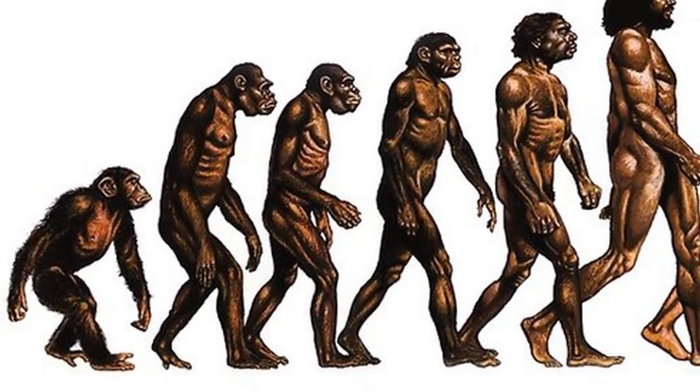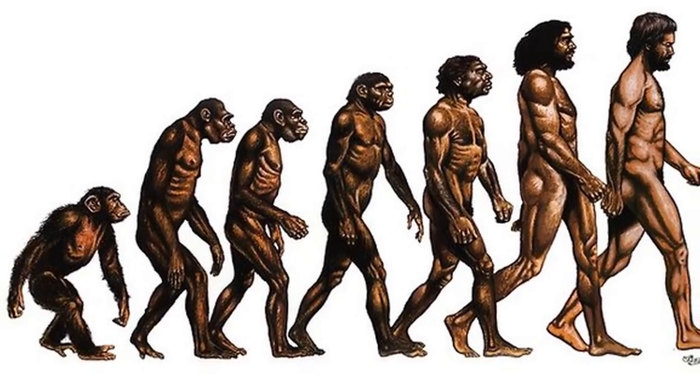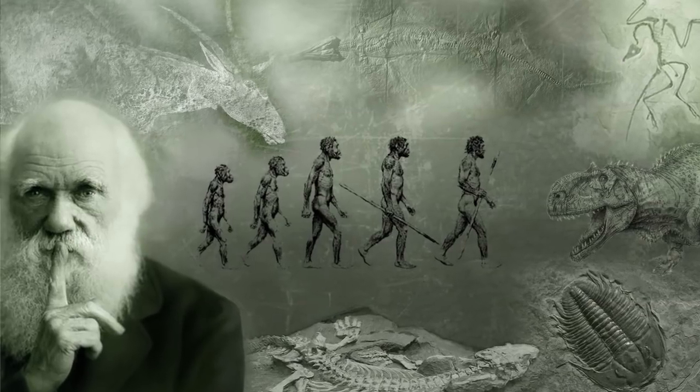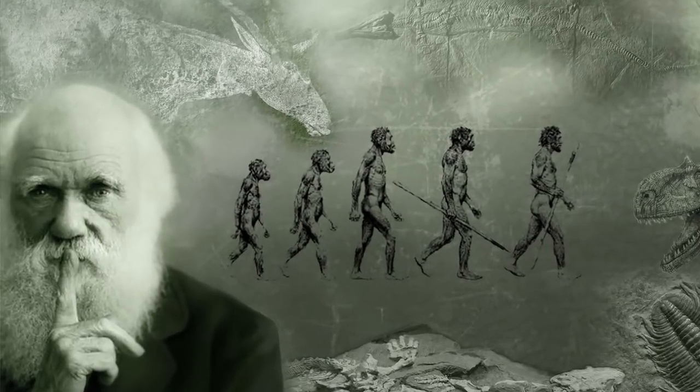Evolutionists put all of their faith in Darwinism. They present it to children in school as fact, when in reality, evolution is only a theory. After 150 years, evolution is still just a theory, or so they say.